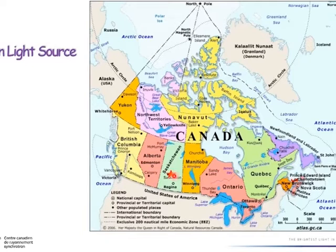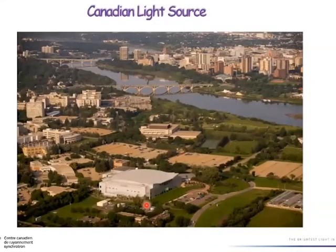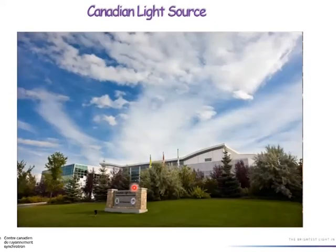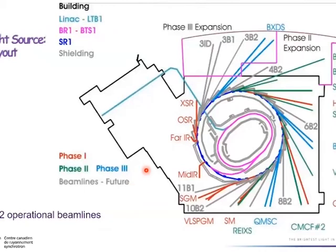In North America, here is Canada. The Canadian Light Source is the only such facility in Canada. It's located in Saskatoon, not far from Calgary or Regina — roughly in the middle of the country — on the campus of the University of Saskatchewan. This is the building of the Canadian Light Source. The linear accelerator produces electrons accelerated to 200 megaelectronvolts, which are then boosted in the booster ring to 2.9 gigaelectronvolts and injected into the storage ring.